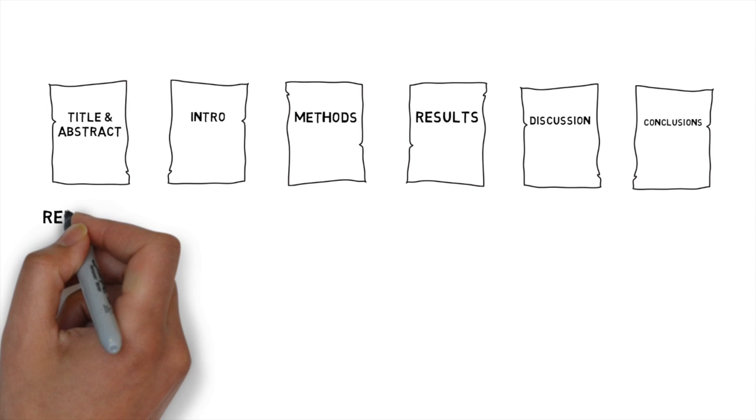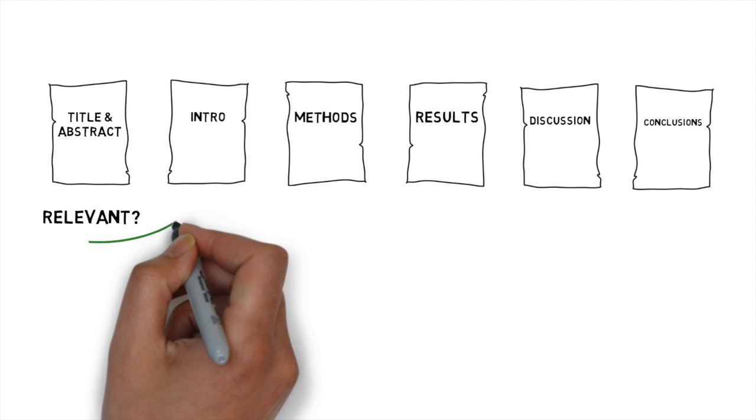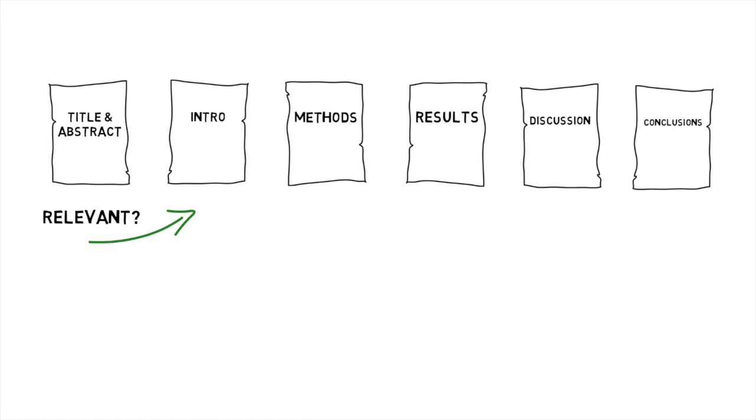So here's my average approach. I'll look at the title and abstract to answer one question. Is this topic and paper at all relevant to me or not? If the answer is yes, then I move on to read the rest of the paper. If the answer is no, I throw out the paper and move on with my life.